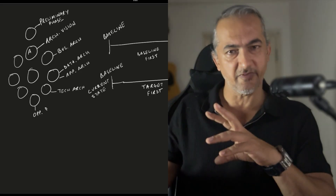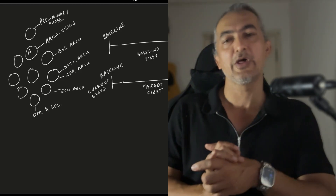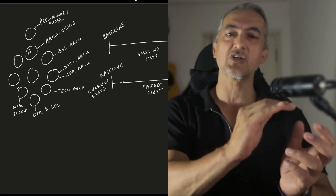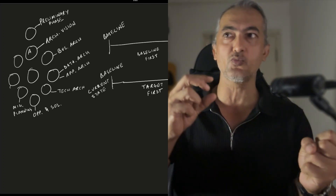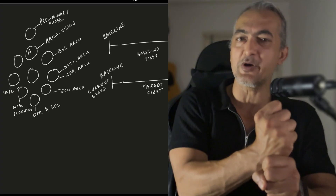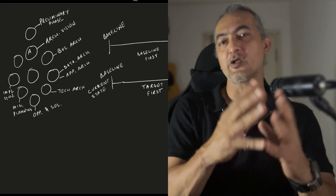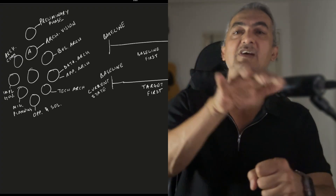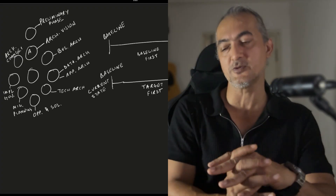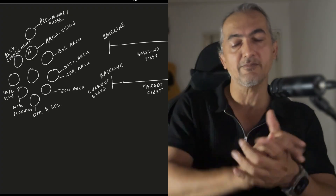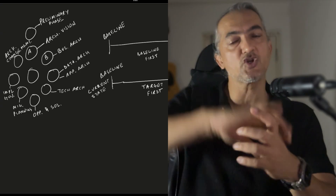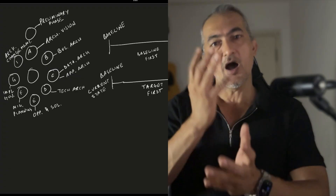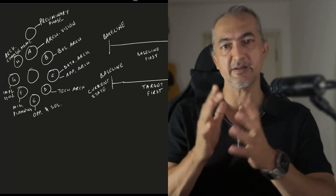Those are the architecture development phases. Then you get into Opportunities and Solutions and Migration Planning, which are your planning phases. Then Implementation Governance is your implementation phase — architecture teams don't usually do the implementation themselves, so they perform governance over whoever is doing it. And then you have Architecture Change Management once implementation has been done.